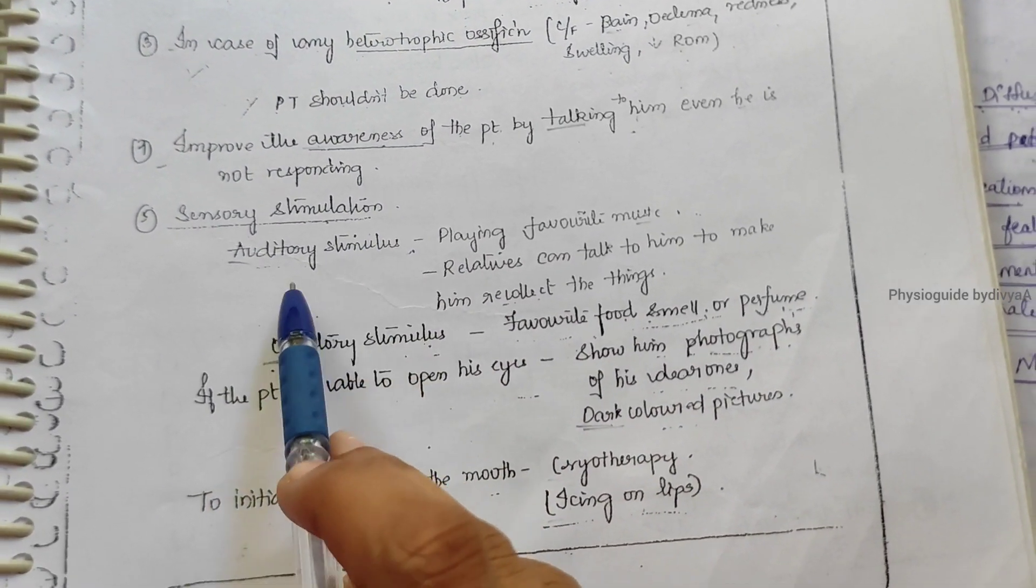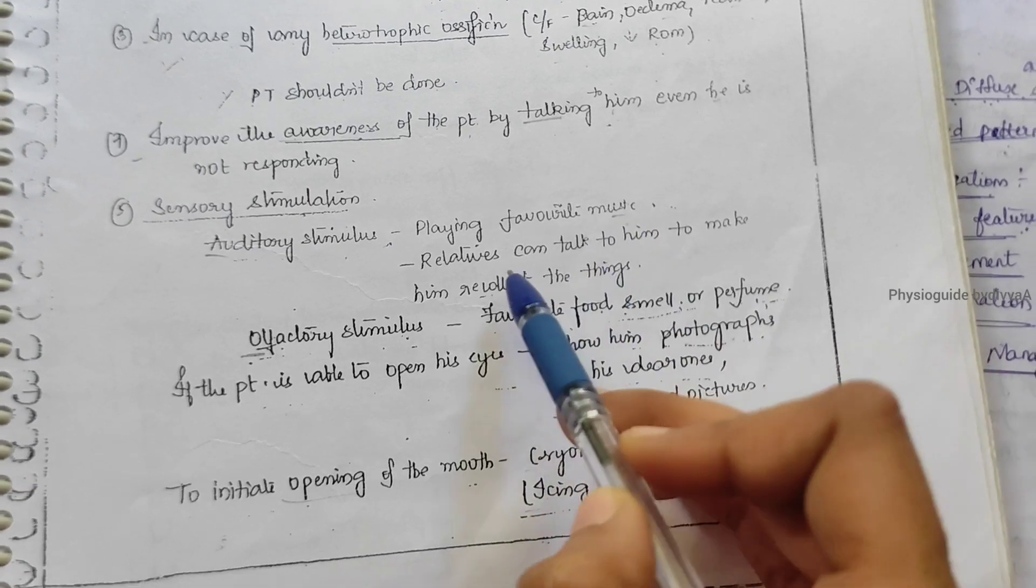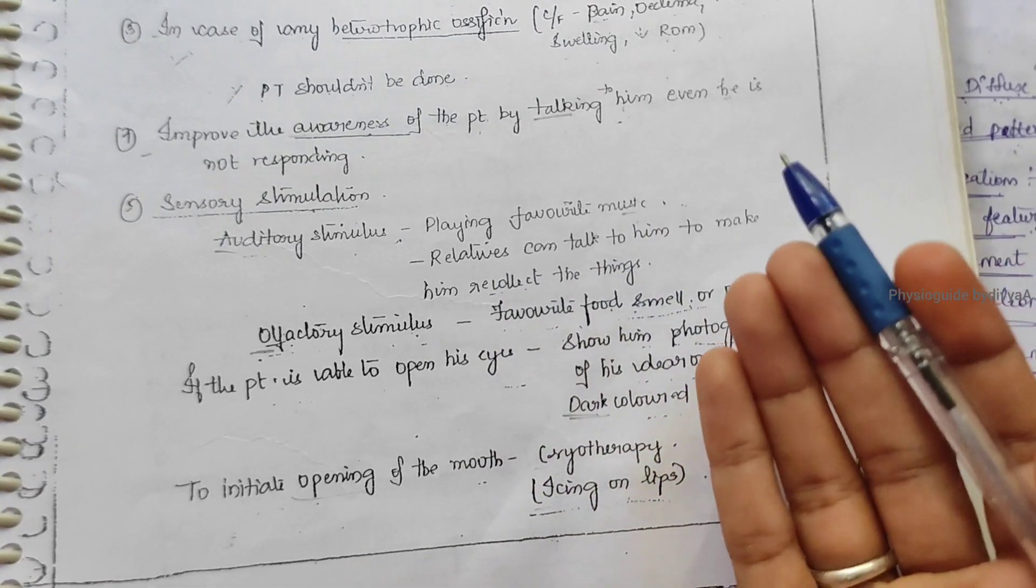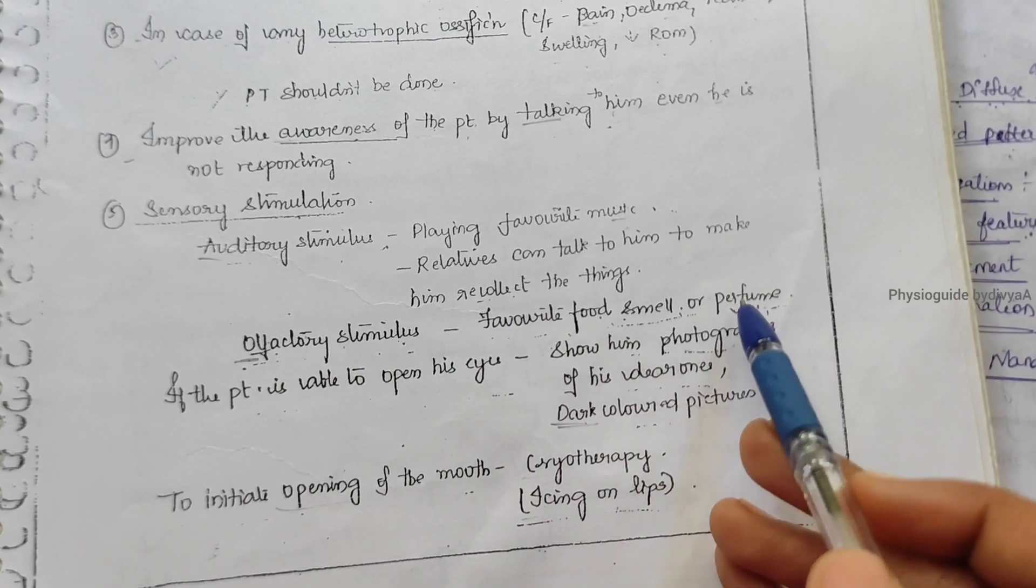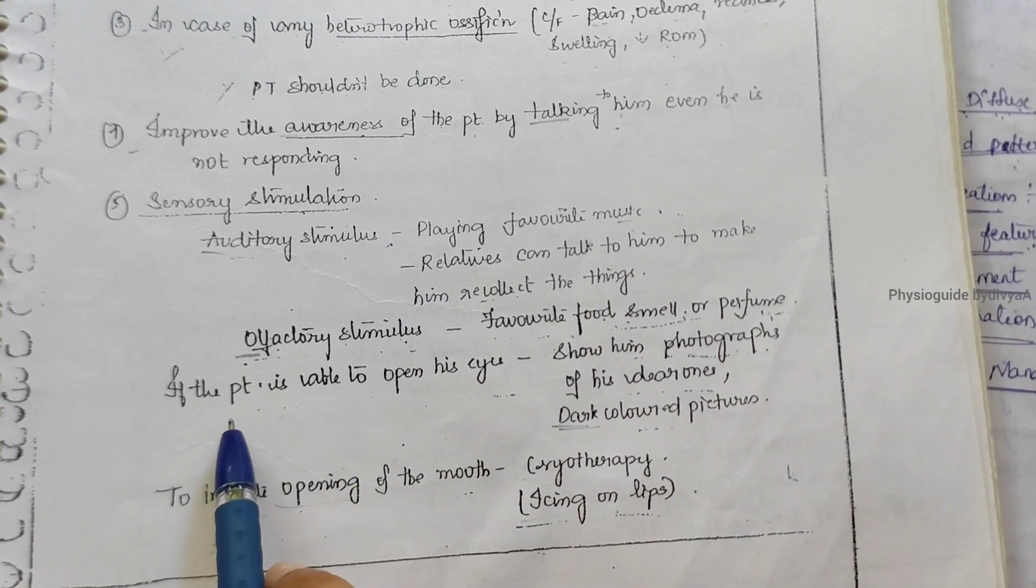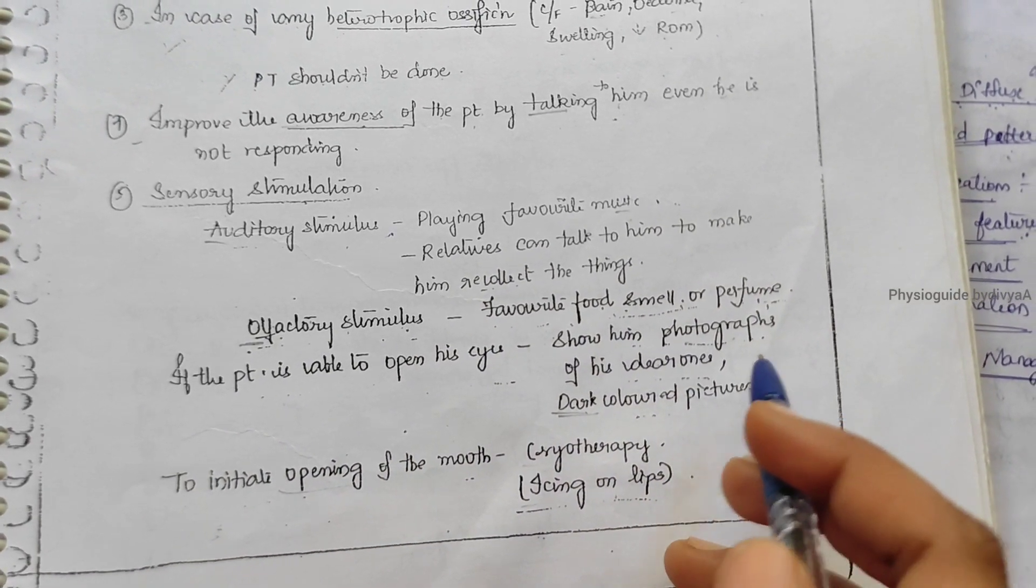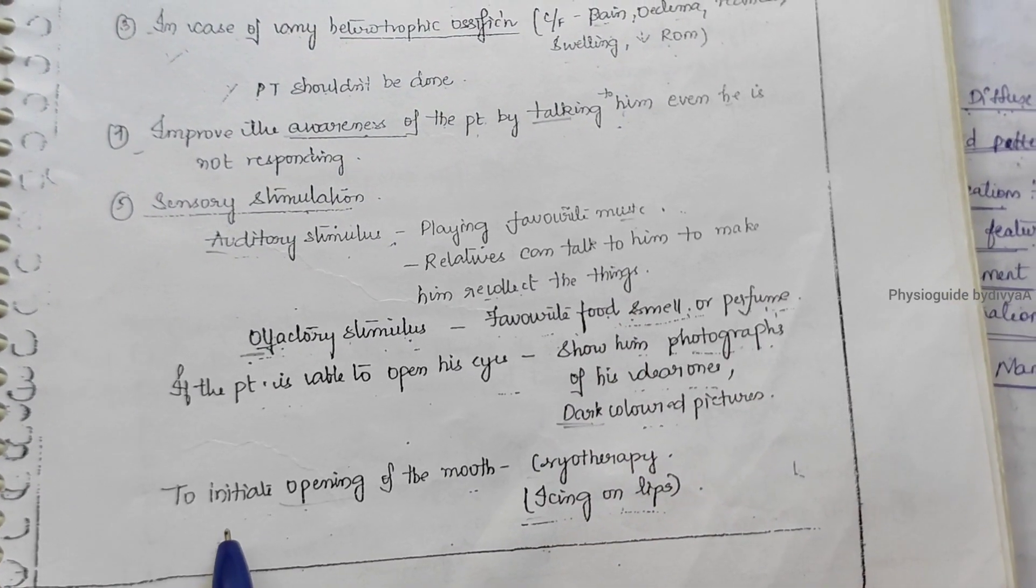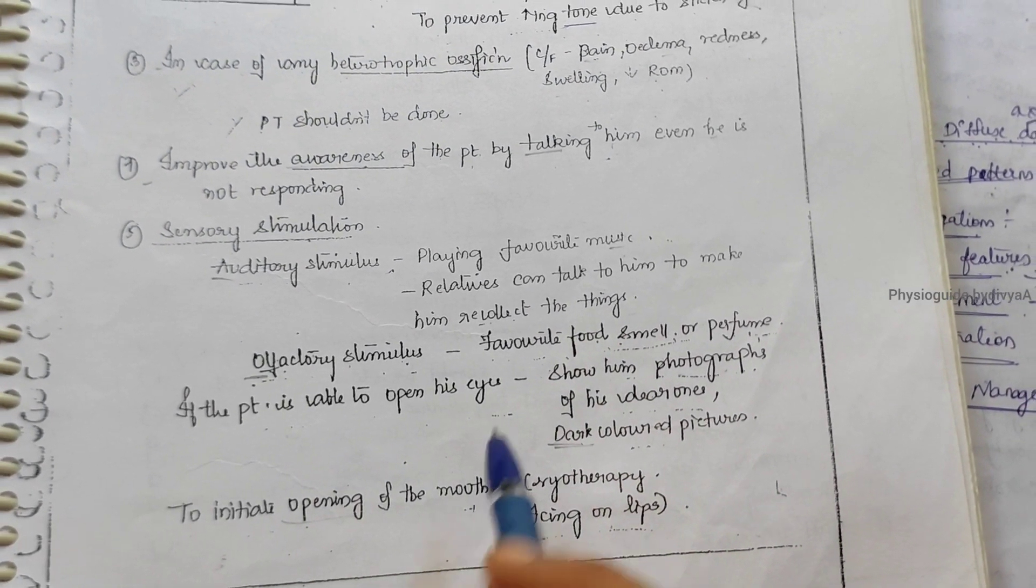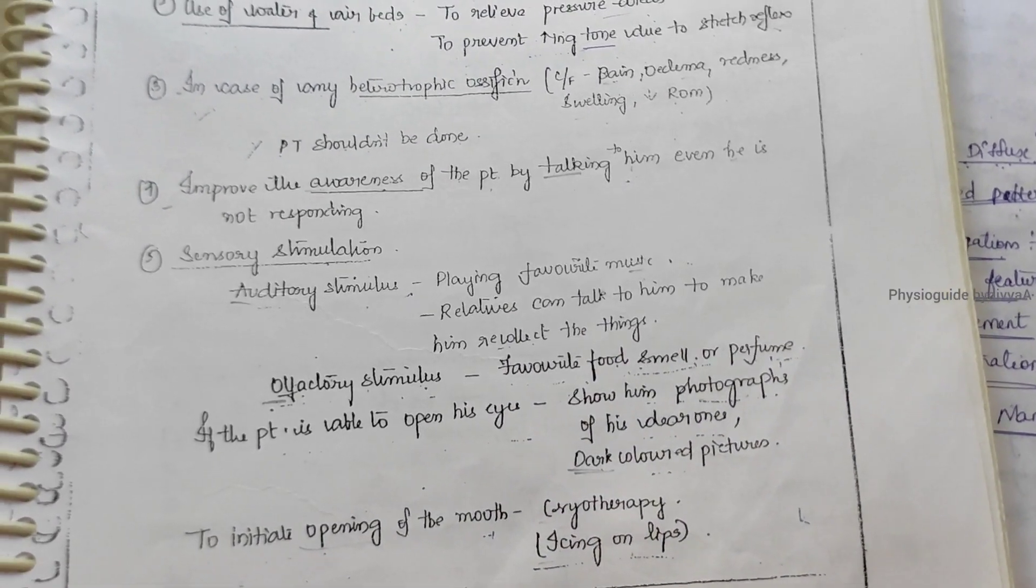Sensory stimulations include auditory like playing favorite music or having relatives talk to them. Olfactory - smell favorite food or perfume. If the patient can open their eyes, show photographs of dear ones or dark colored pictures so they can identify. To initiate opening of the mouth, use cryotherapy - icing on lips.